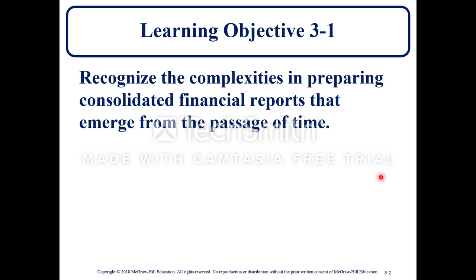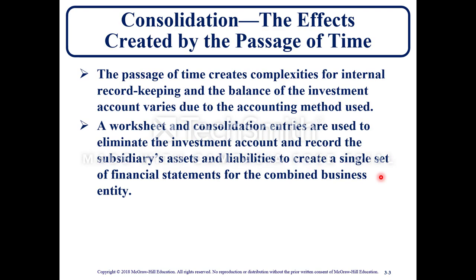Learning objective 3-1: recognize the complexities in preparing the consolidated financial reports that emerged from the passage of time. The passage of time creates complexities for internal record keeping, and the balance of the investment account varies due to the accounting method used. A worksheet and consolidation entries are used to eliminate the investment account and record the subsidiary's assets and liabilities to create a single set of financial statements for the combined business entity.